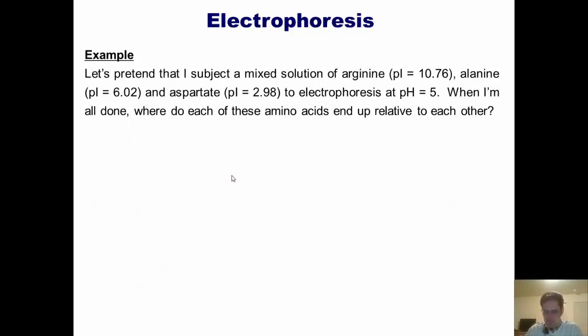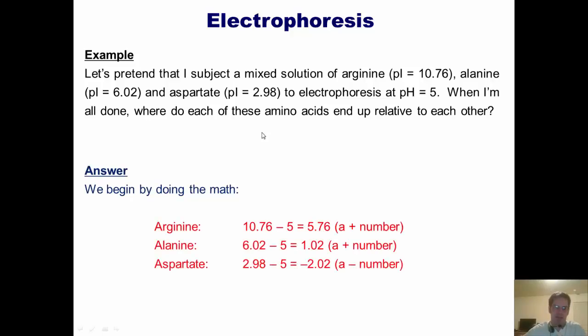Let's take a look at an example. Let's pretend that I subject a mixed solution of arginine, alanine, and aspartate with these individual isoelectric point values to electrophoresis at pH 5. When I'm all done, where do each of these amino acids end up relative to each other? Let's see if we can figure this out. We begin by doing the math. Here's arginine. What I do is I take its isoelectric point and I subtract the pH of the solution, 5, and I end up getting this number, 5.76. That is a positive number.